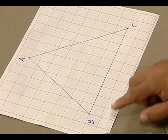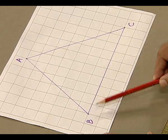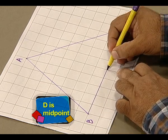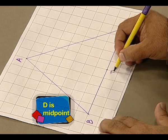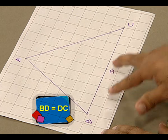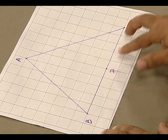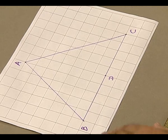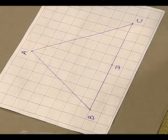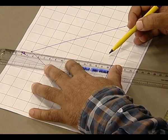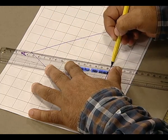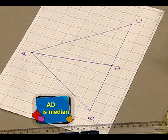The midpoint is at equal distance from B and C — counting 1, 2, 3, 4, 5 units from B. Let the midpoint be D. We observe that the length of BD and the length of DC are equal; both of them are 5 units. Now we join the vertex A to the midpoint of the opposite side D. The line segment AD is the median.